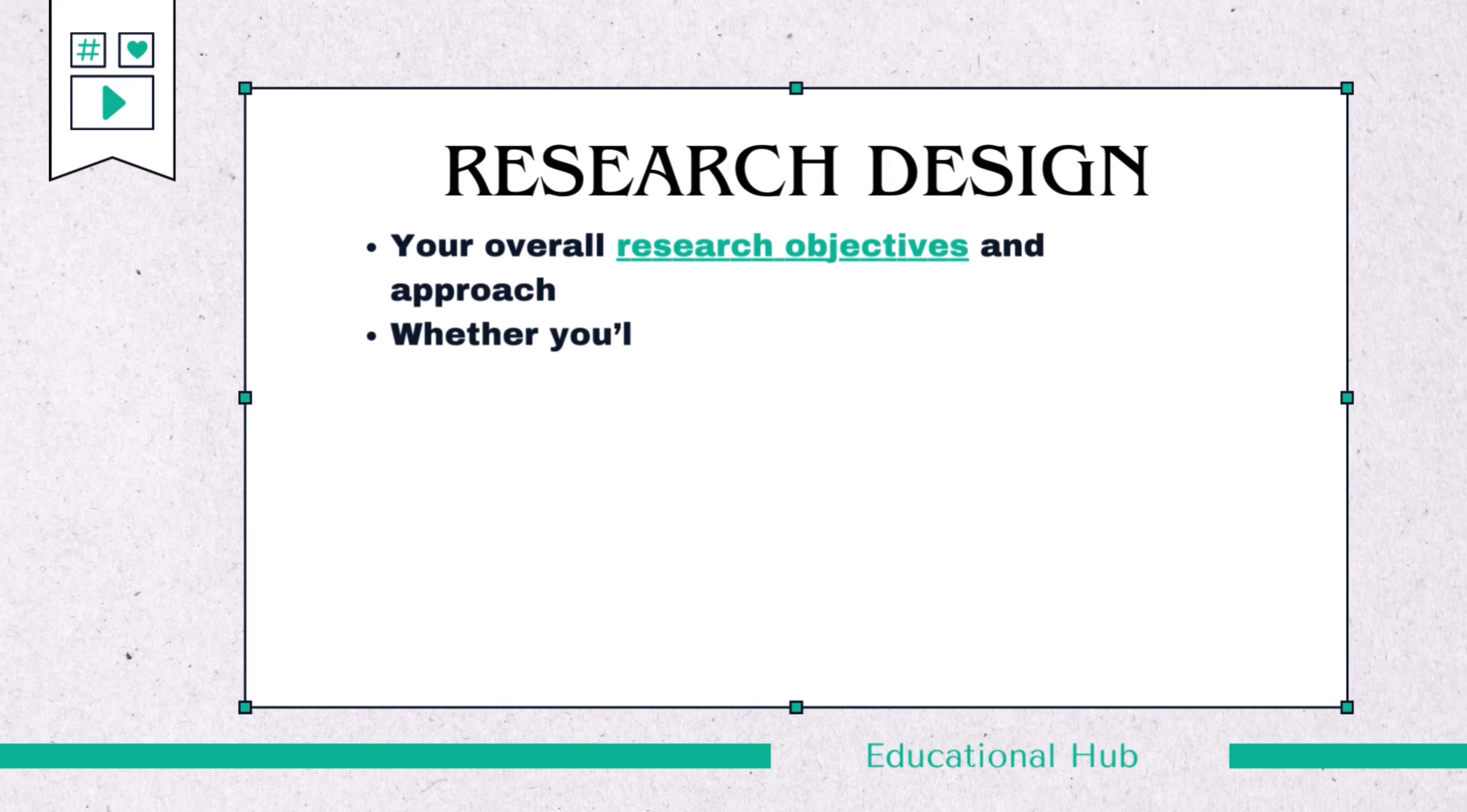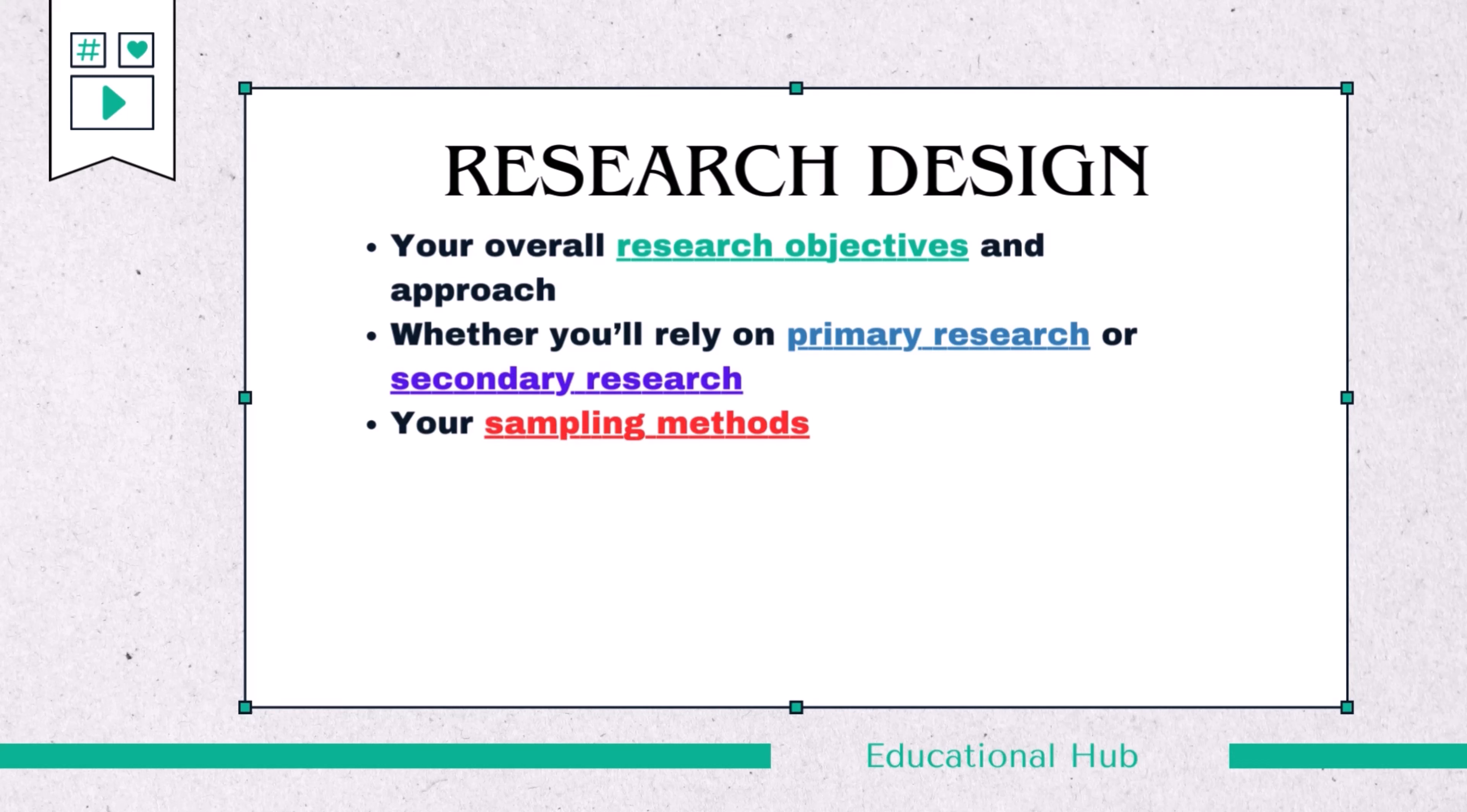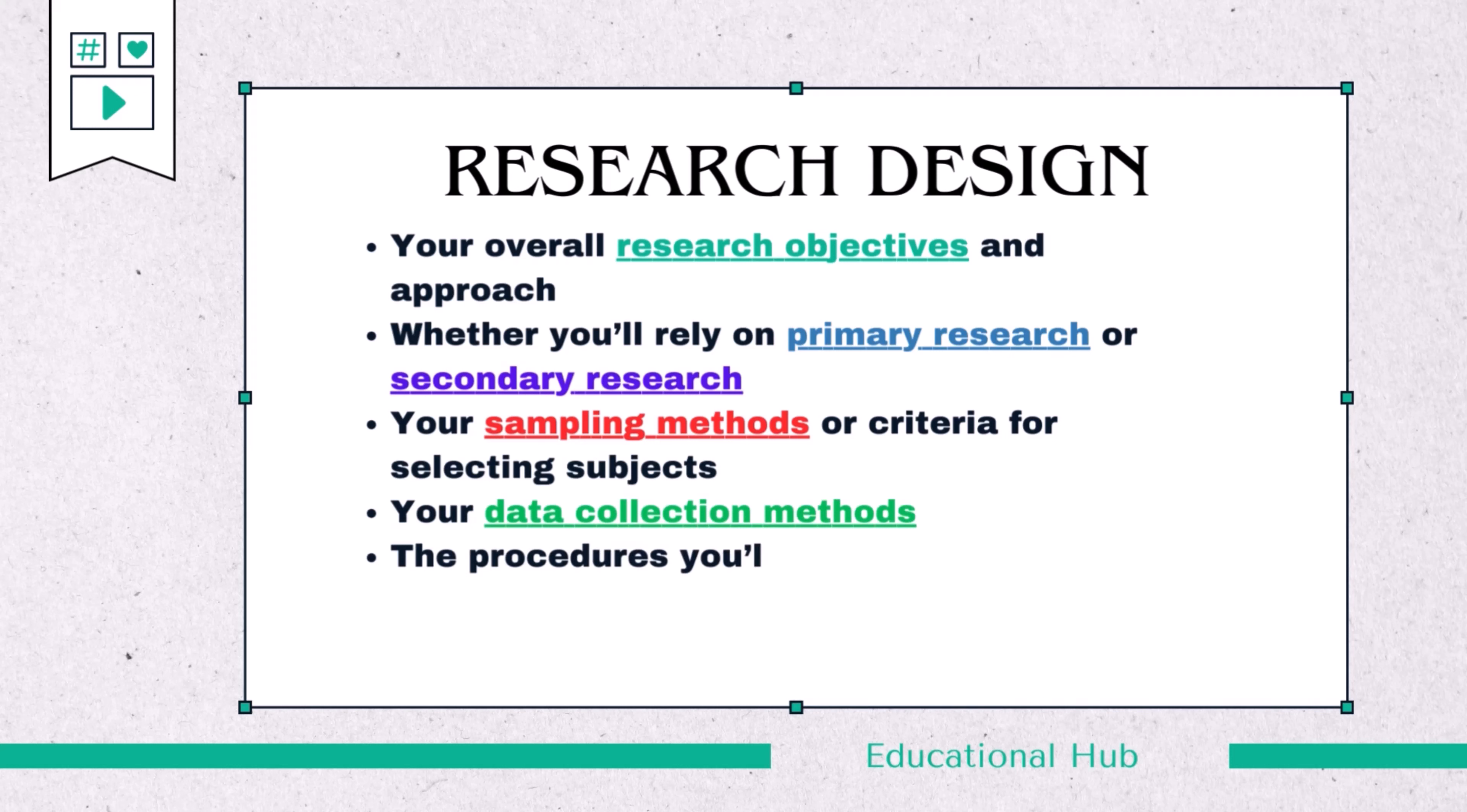Creating a research design means making decisions about: 1. Your overall research objectives and approach. 2. Whether you'll rely on primary research or secondary research. 3. Your sampling methods or criteria for selecting subjects. 4. Your data collection methods. 5. The procedures you'll follow to collect data. 6. Your data analysis methods.